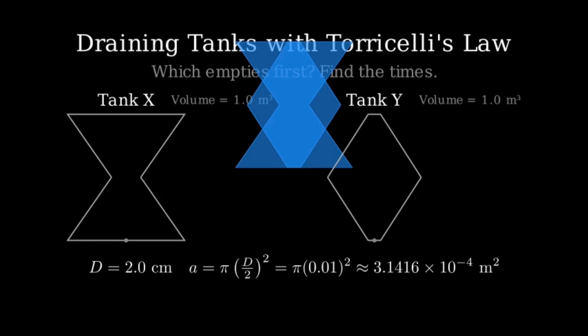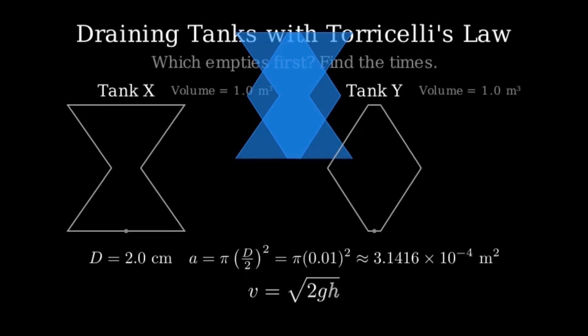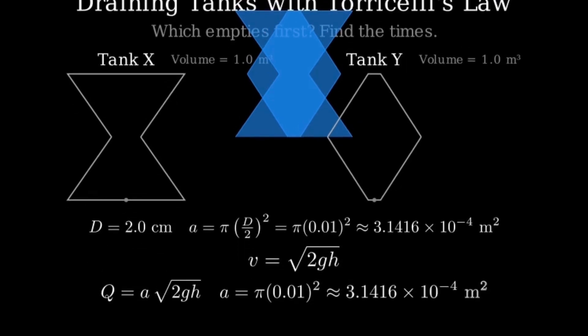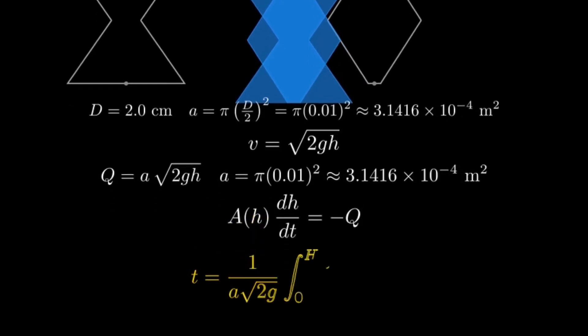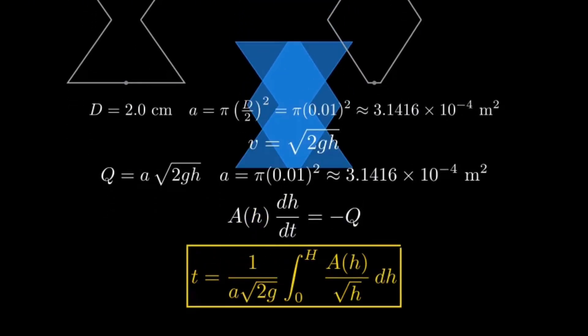Here are the physics basics. Torricelli's exit speed says V equals the square root of 2GH, where H is the water head above the hole. Therefore, the volumetric flow rate is Q equals a times the square root of 2GH. From conservation mass or volume, A of H times dH by dT equals negative Q. Integrating from full height down to zero gives the emptying time: T equals 1 over a times the square root of 2G multiplied by the integral from H equals zero to H of A of H over square root H dH.